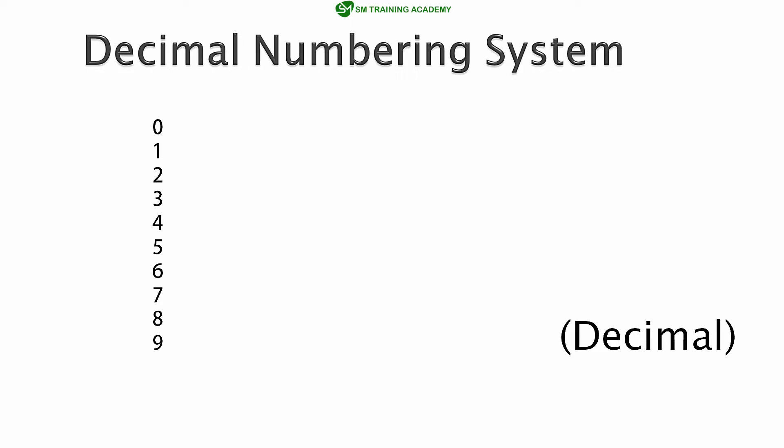That is, we start like 10, 11, 12, 13, 14, 15, 16, 17, 18, 19. After this we move to the next number, adding the prefix 2, continuing with the same order from 0 to 9.